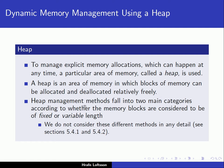In general, heap management methods fall into two main categories according to whether the memory blocks are considered to be fixed or variable length. This is an implementation detail — how the heap is really implemented. There are two methods: allocating a fixed size from the heap or a variable size from the heap. We are not going to consider these two different methods in detail, but if you're interested you can look at sections 5.4.1 and 5.4.2 to read about this.